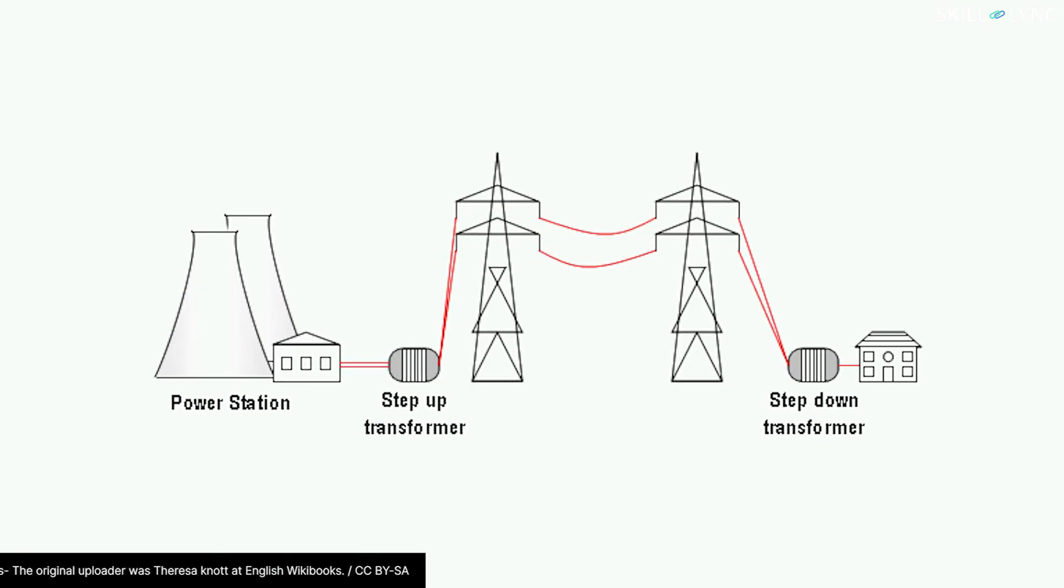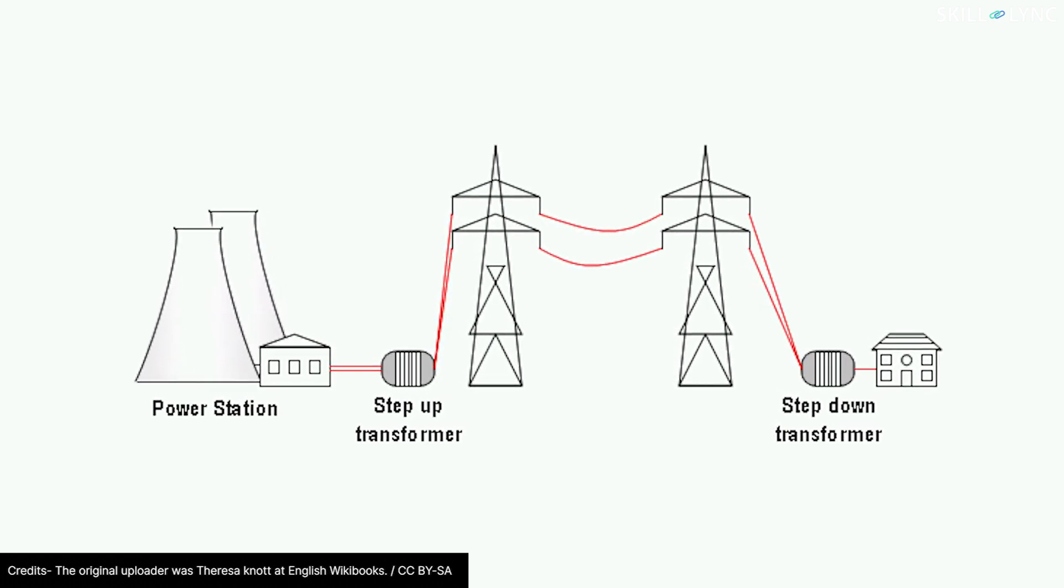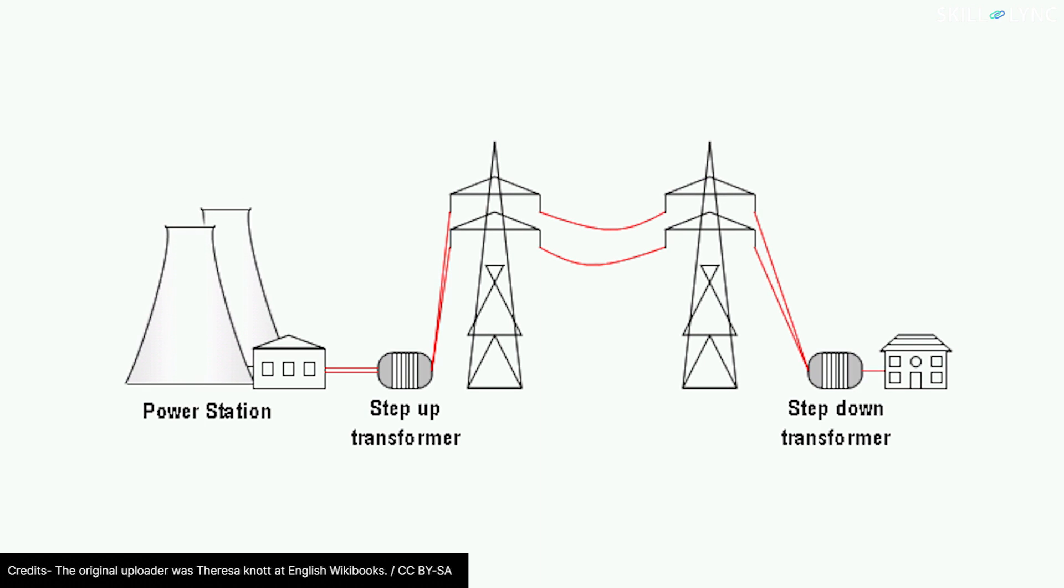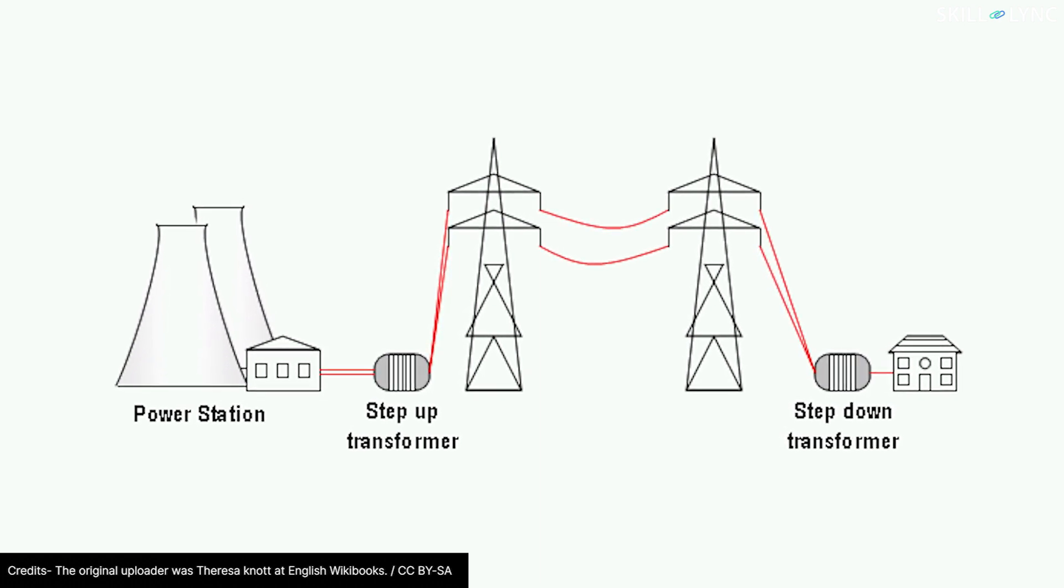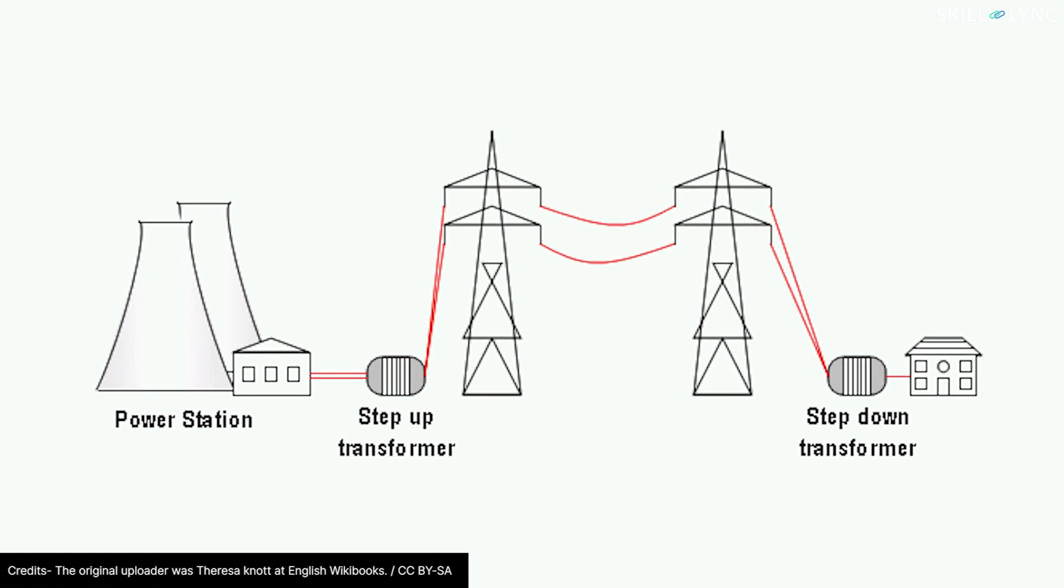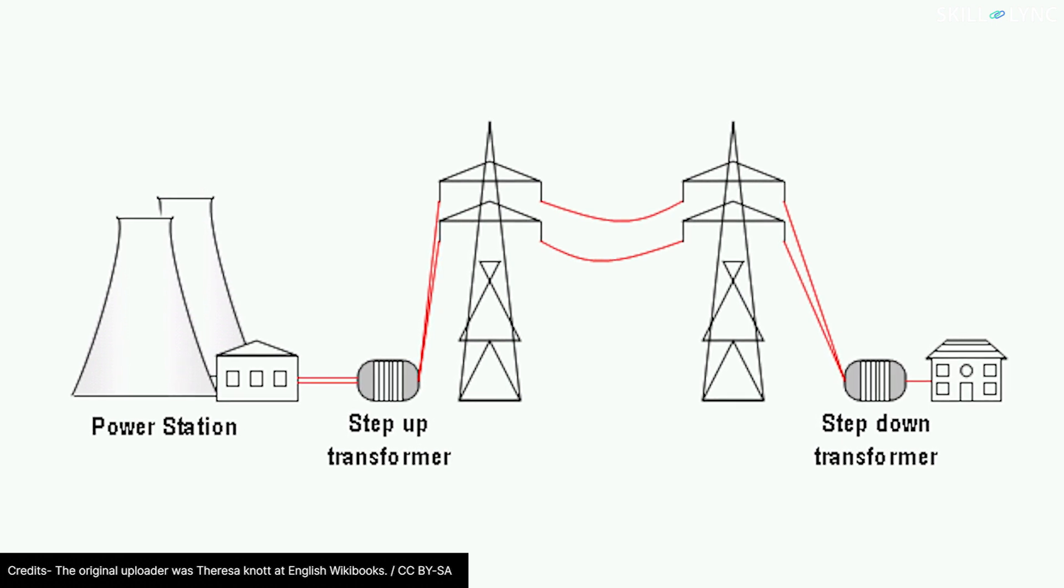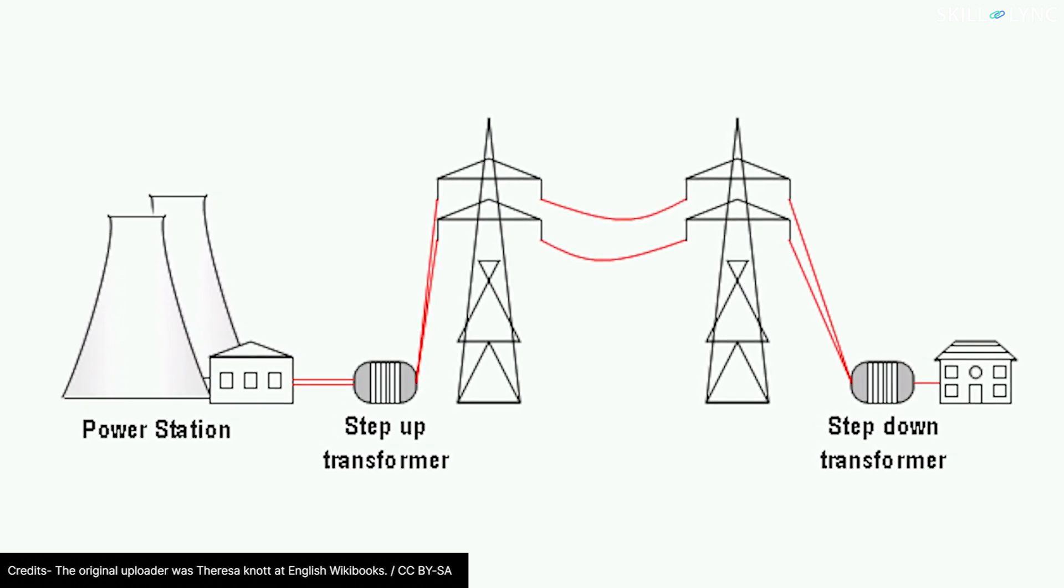Transformers are used in electrical distribution systems to transfer power from power stations to the desired location. A step-up transformer is used from power stations to transmission towers so that the losses through power lines can be compensated. A step-down transformer is used from the transmission tower to the desired locations so that the required voltage is received by the destination.